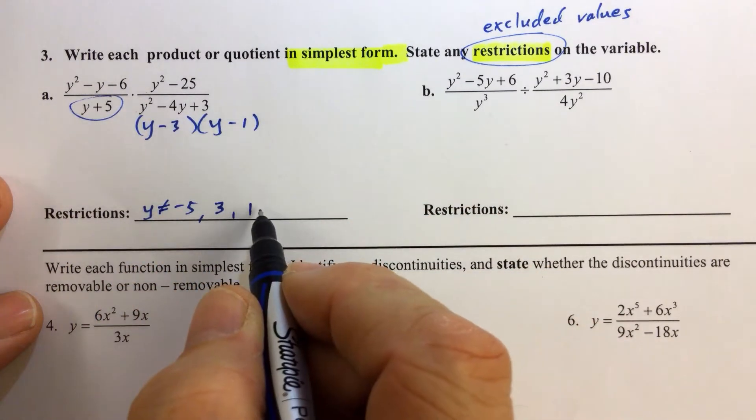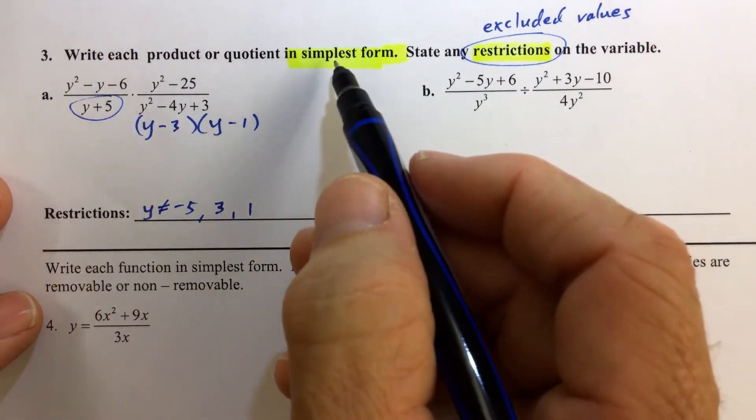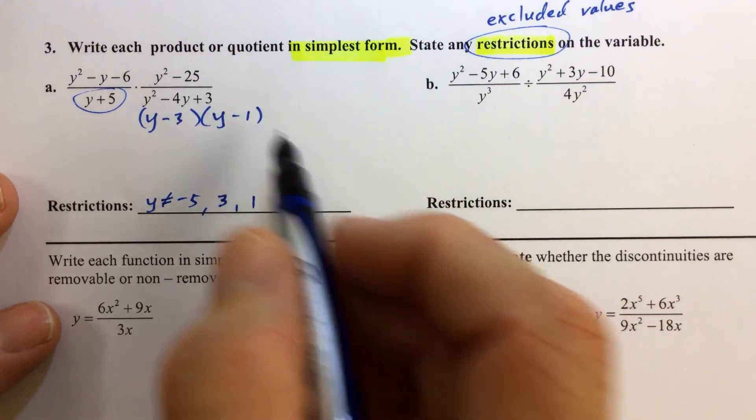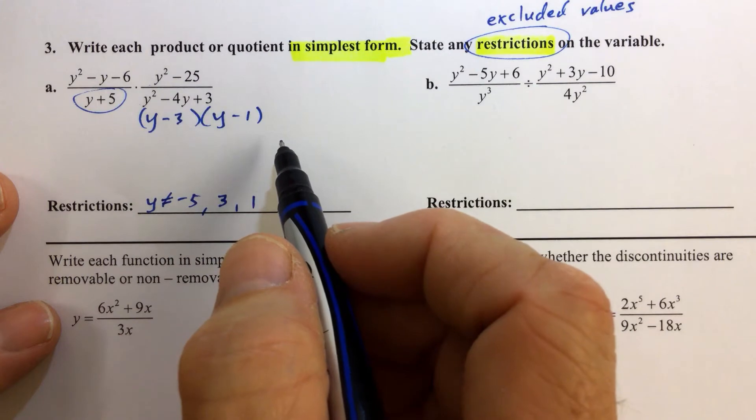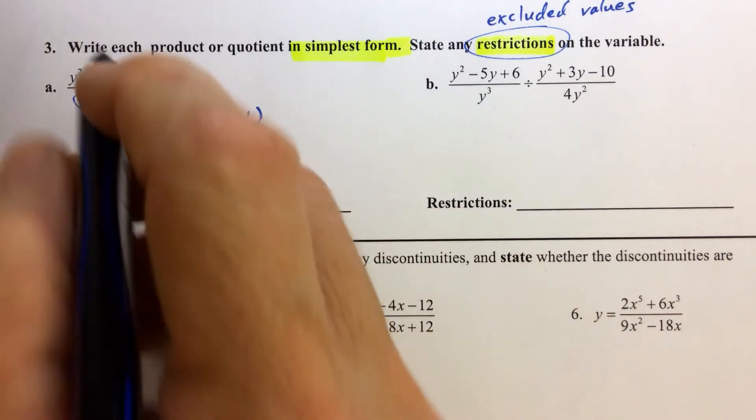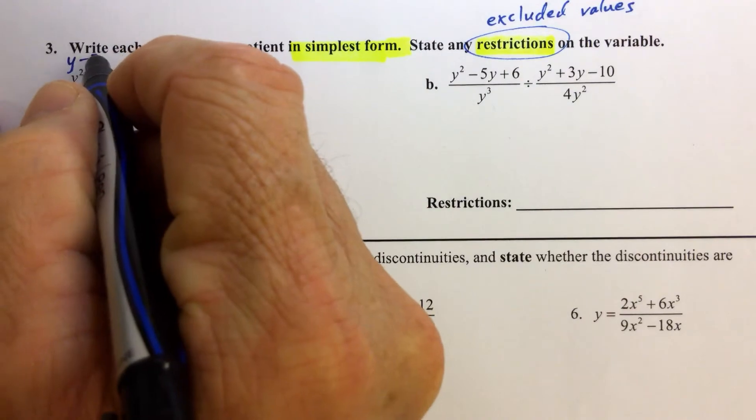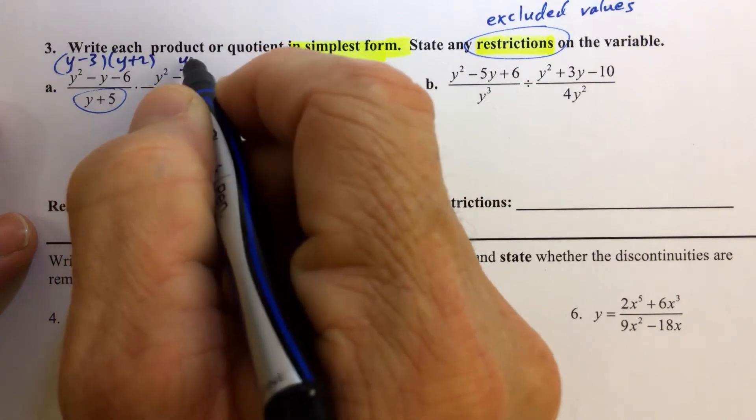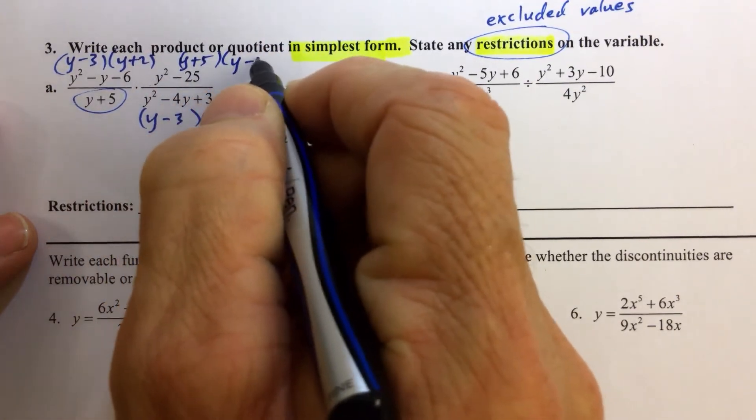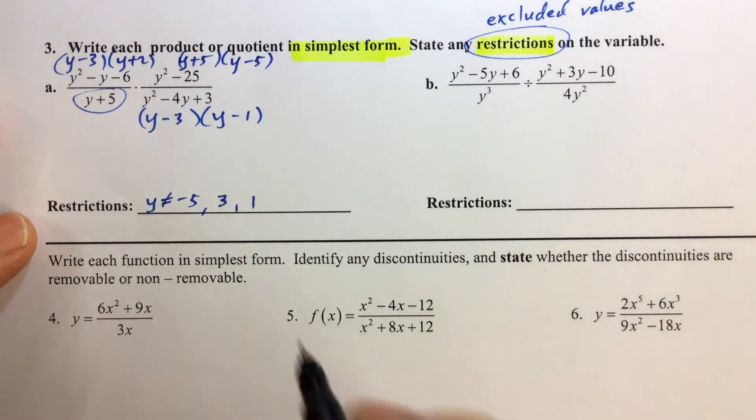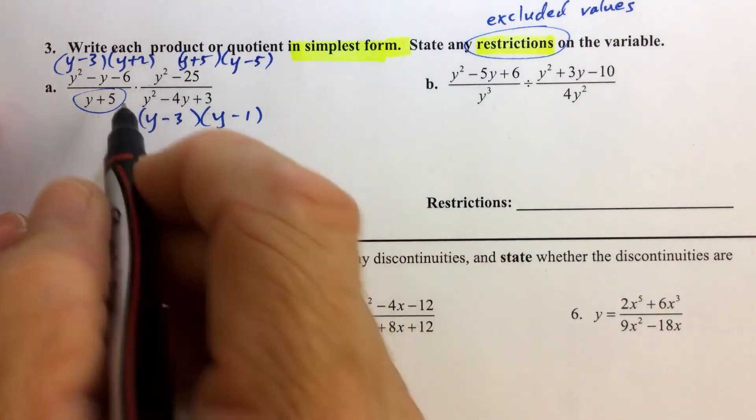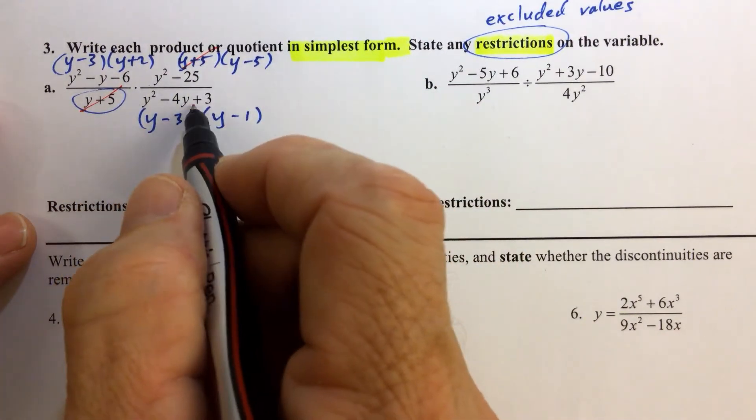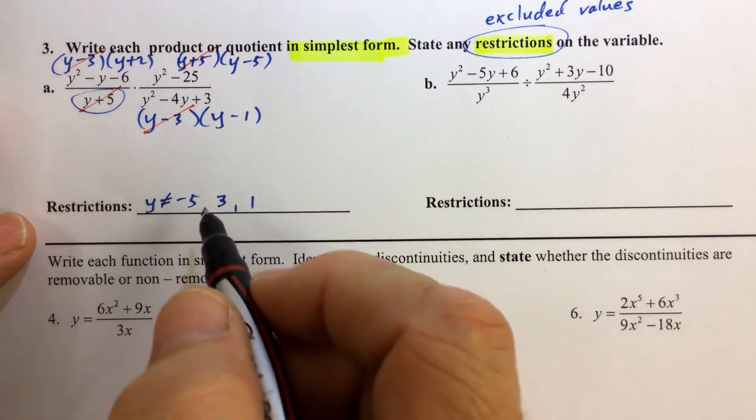Those are the restrictions for this particular problem. Now our objective of writing the product in simplest form can be obtained by factoring every single one of the polynomials in both numerator and denominator. So we have y minus 3 times y plus 2. y squared minus 25 is the difference of squares, so we have y plus 5 times y minus 5. Now we just cancel any factors that are alike.